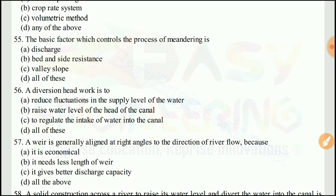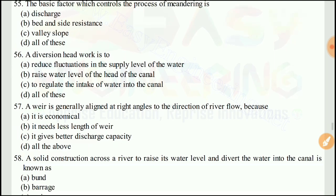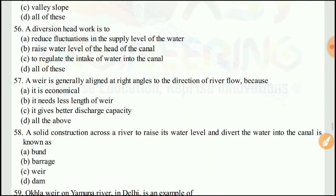Question 55: The basic factor which controls the process of scouring is — the right answer would be D, all of the above: discharge, bed resistance, and side resistance.